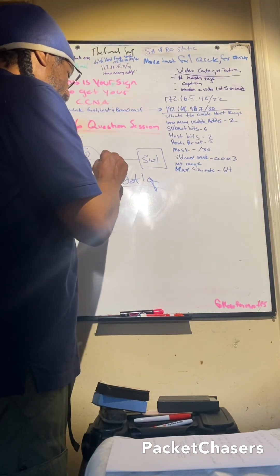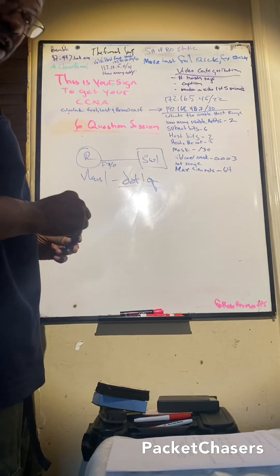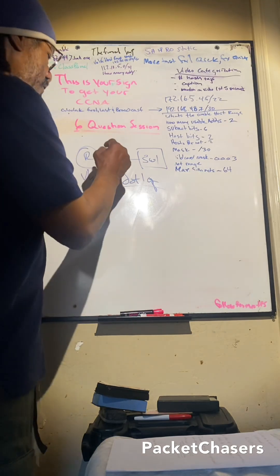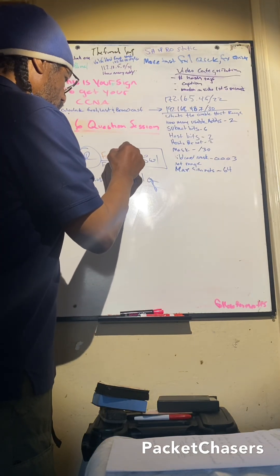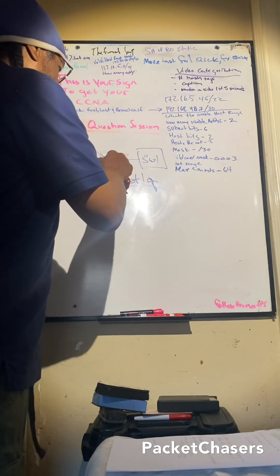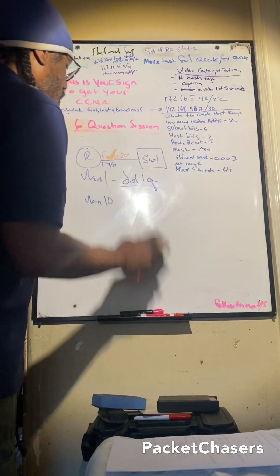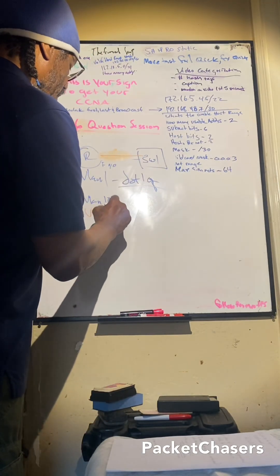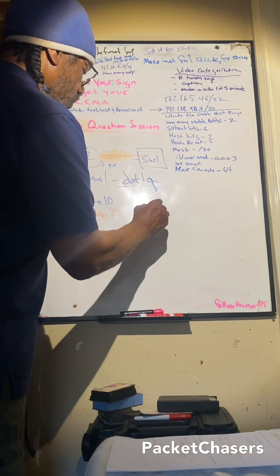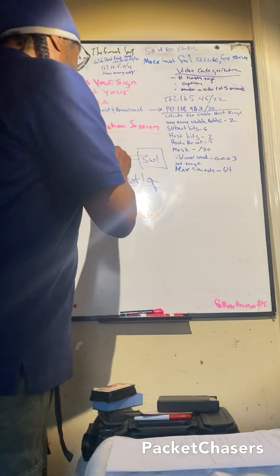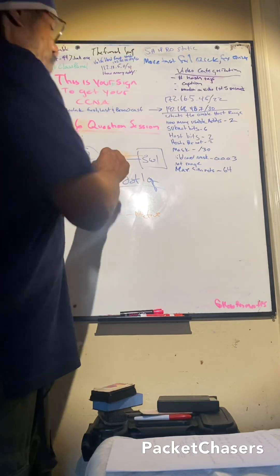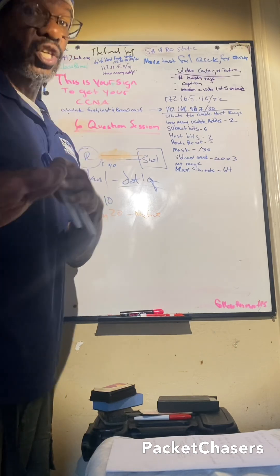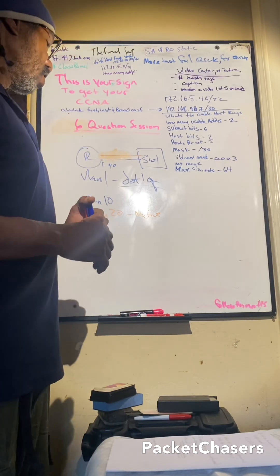For example, let's say f0/0 is VLAN 10. We'd create a sub-interface — interface f0/0.20 — and that would be VLAN 20, which we'll make the native VLAN for this situation. For that port to be a trunk, it definitely has to be encapsulated with dot1q encapsulation.